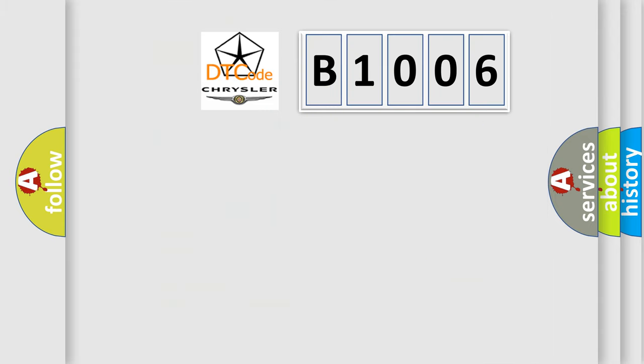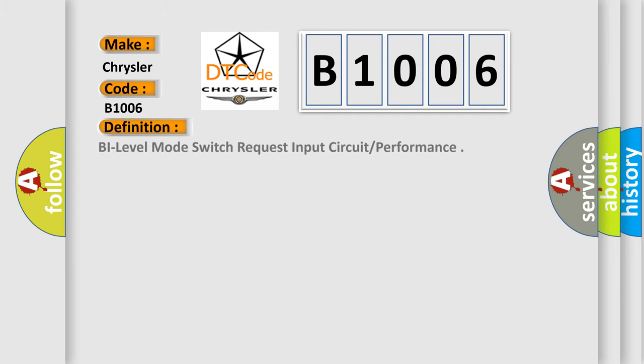The number itself does not make sense to us if we cannot assign information about what it actually expresses. So, what does the diagnostic trouble code B1006 interpret specifically for Chrysler car manufacturers? The basic definition is: By Level Mode Switch Request Input Circuit or Performance.